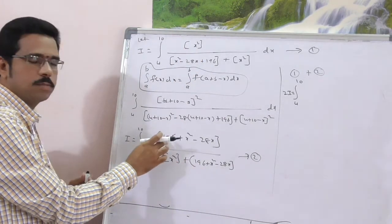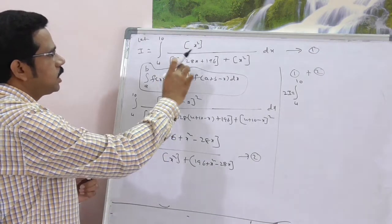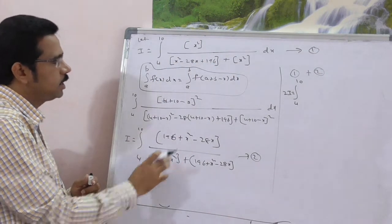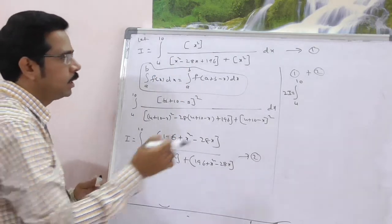What is this? x square minus 28x plus 196. Just observe the denominator. This is the first equation, this is the denominator. This is the second equation, the denominator. Both are same only.